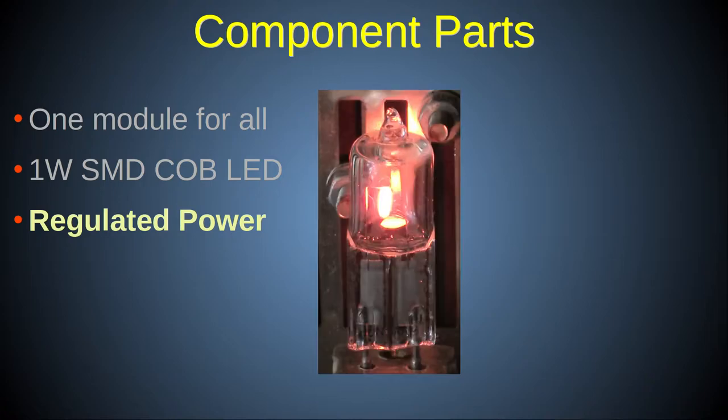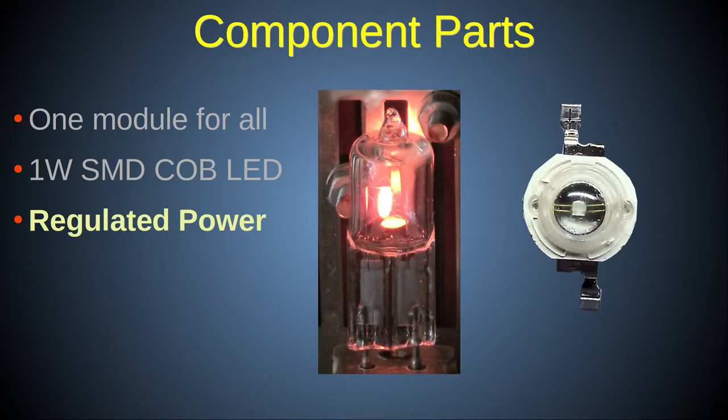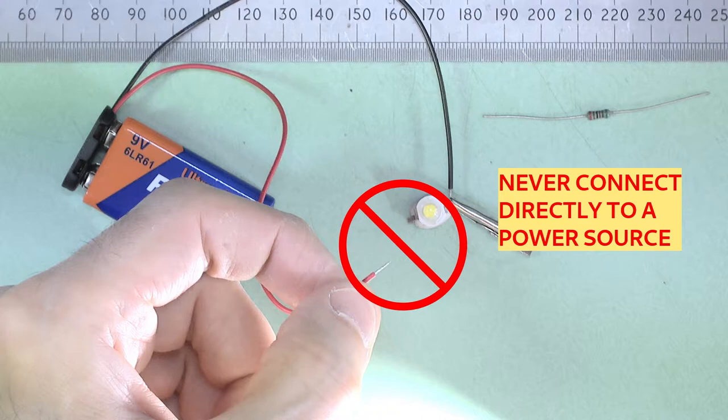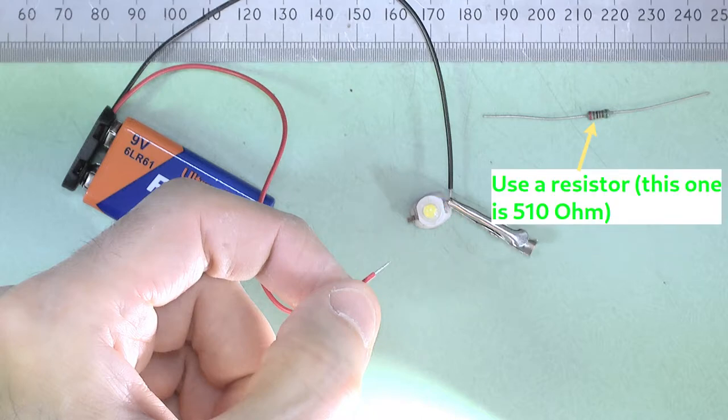Unlike an incandescent bulb, these LEDs have minimal internal resistance so you cannot just hook them up directly to a battery or power supply because this will cause them to blow instantly. For that reason you must always use a suitable current limited power supply.